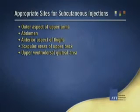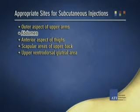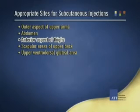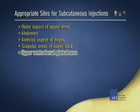Common subcutaneous injection sites are the outer aspects of the upper arms and the abdomen, from just below the costal margins to the iliac crests. Other safe sites are the anterior aspect of the thighs, the scapular areas, and the upper ventrodorsal gluteal areas.